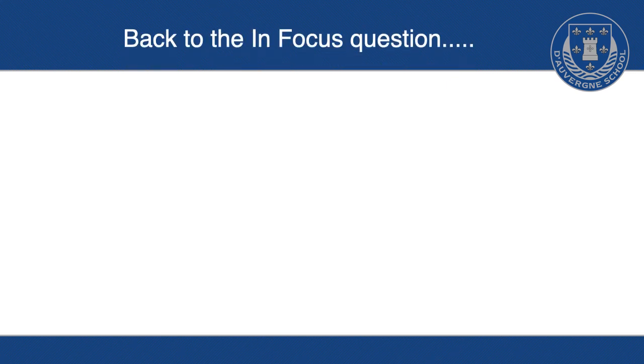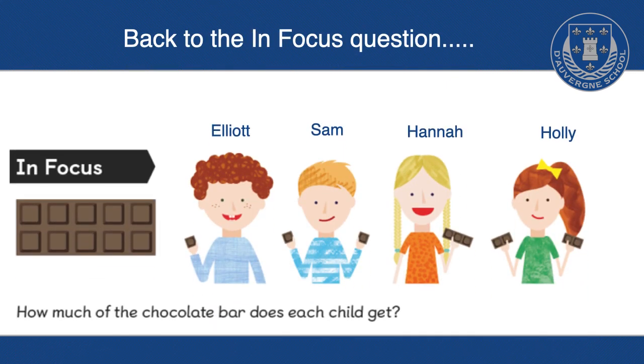And if we go back to the in focus question, we've got Elliot, Sam, Hannah and Holly. So remember, there's ten equal parts all together. If we think and look about how many of those parts Elliot has, he has one out of the ten. So his fraction that he has is one-tenth. Sam has two, so he will have two-tenths. Hannah has three, so she'll have three-tenths. And Holly has four, so she's going to have four-tenths.